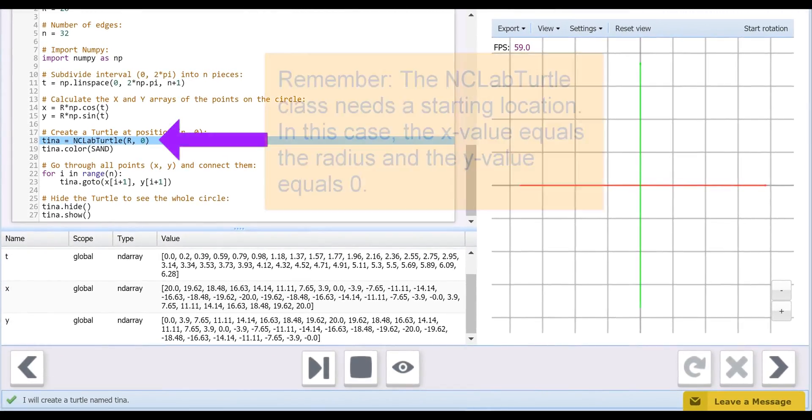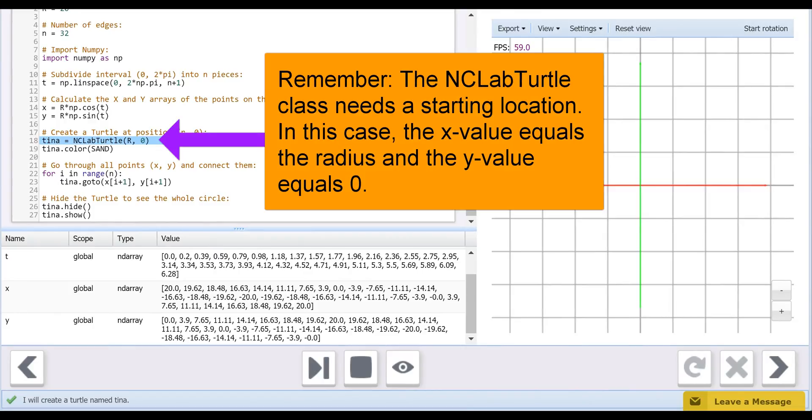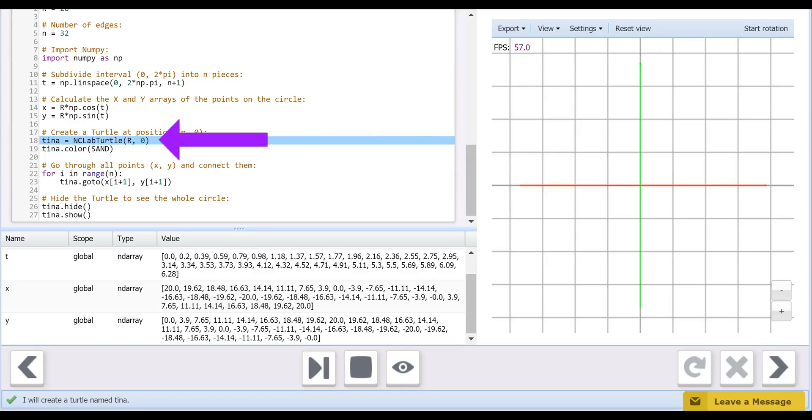On line 18, we generate Tina, which is an instance of the NCLabTurtle class. Since our python turtle will be drawing lines along the circumference, we are going to start her at point R, 0. In other words, X equals R and Y equals 0.